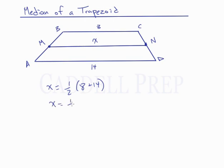So we have x equals 1 half of 22. x equals 11. So this median is the average of these two sides.